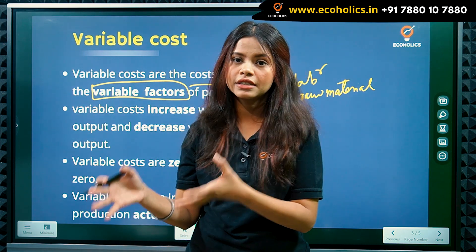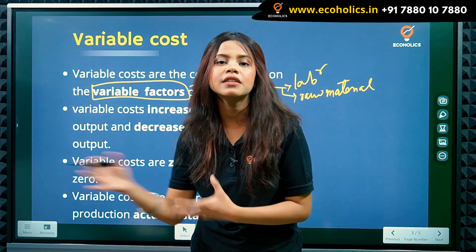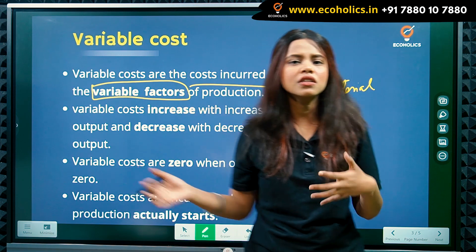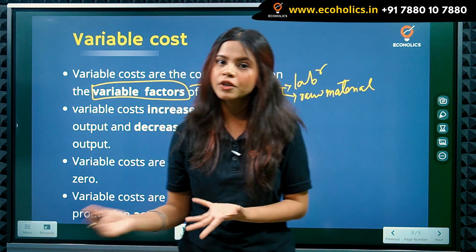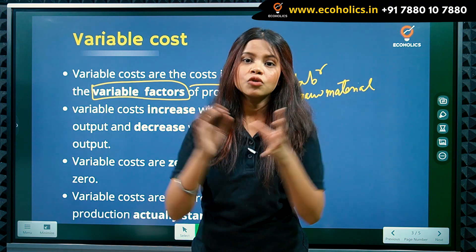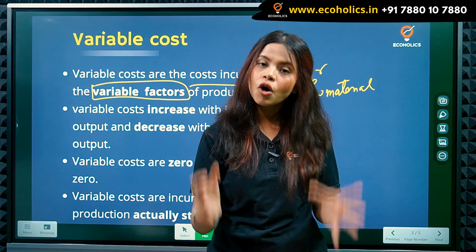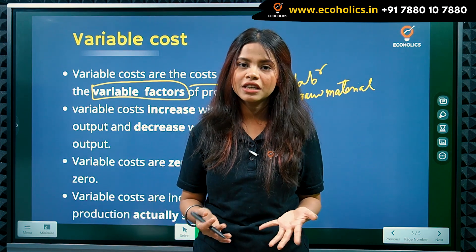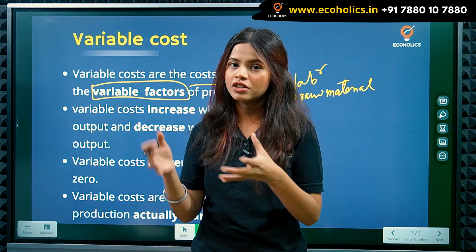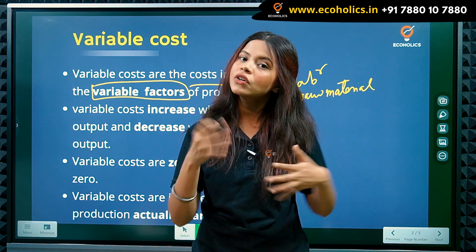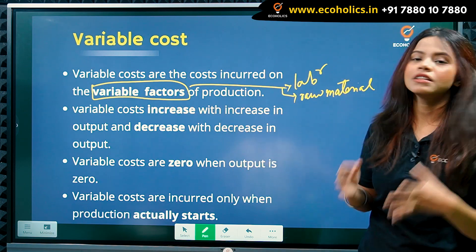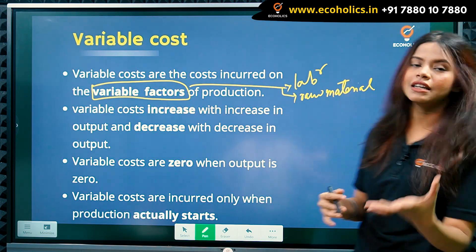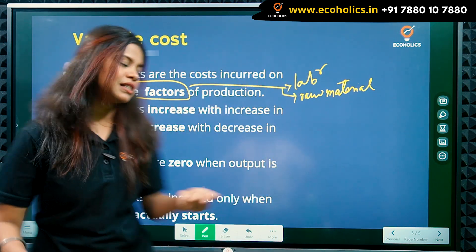Fixed costs are incurred on fixed factors of production — those factors you cannot easily change. But variable factors like labor can be changed: if we need more labor, we can employ more people. Similarly, we can increase or decrease raw material. So variable costs are the costs incurred on variable factors of production.